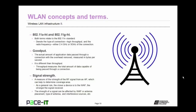Now let's talk about 802.11a-ht and 802.11g-ht. Both of these terms relate to the 802.11n standard. They denote the type of connection — a high throughput connection — and the radio frequency, which will either be the 2.4 GHz radio frequency band or it may be a 5 GHz connection. Then there's goodput. Goodput is the actual amount of application data passed through a connection with the overhead removed. It's measured in bytes per second, and it is different than throughput. Throughput measures the total amount of data capable of being passed through a connection, so it includes network overhead.